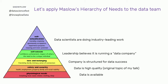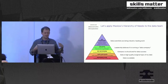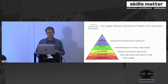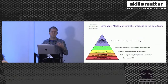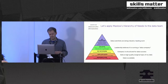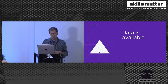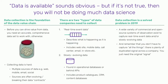Data being available sounds really obvious, but if it's not true, you're not going to be doing much data science. Data collection is the foundation of the data value chain. If you don't have that data, fundamentally you're a brain in a jar — you don't have the nervous system providing all those signals.